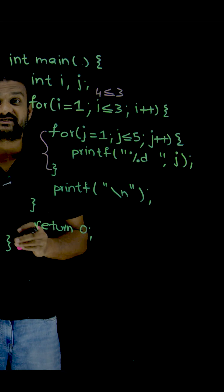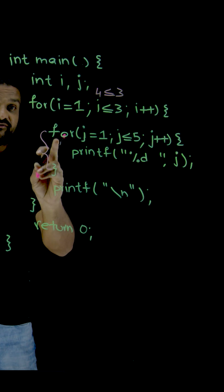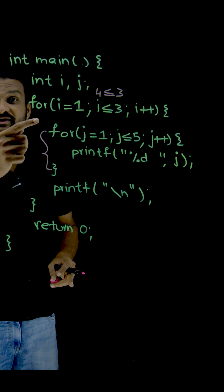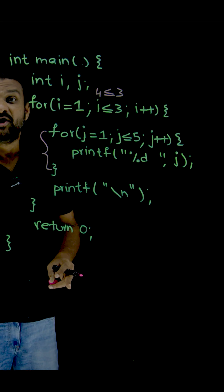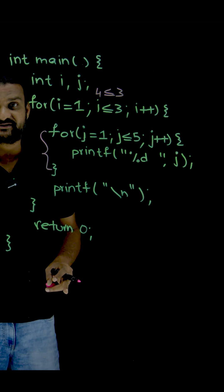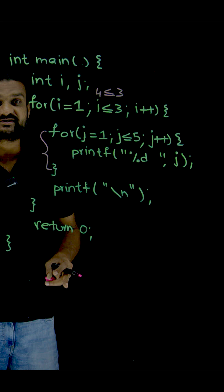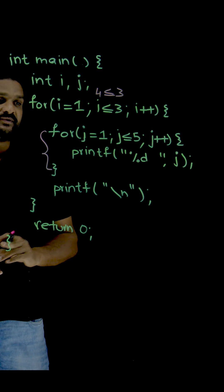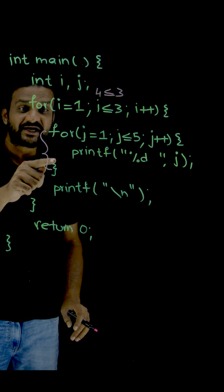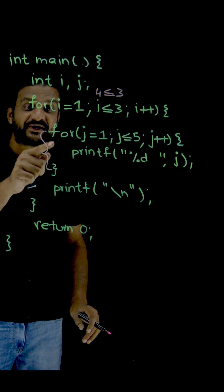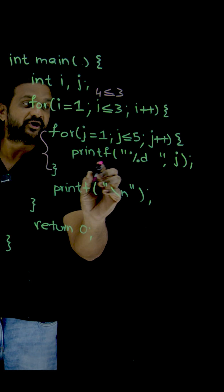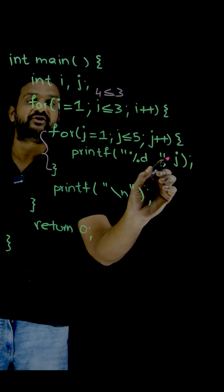So every time we come into the outer loop, the inner loop runs fully. We come into this outer loop 3 times. What is the output? What is being printed? Inside the inner loop, we are going to print the value of j.